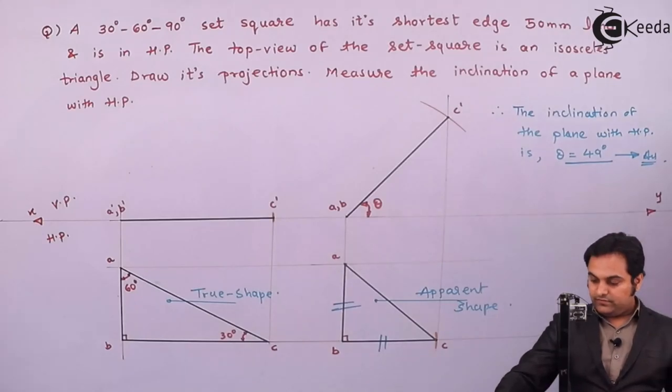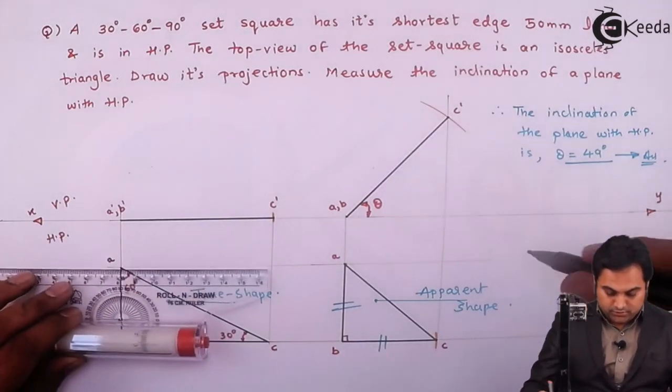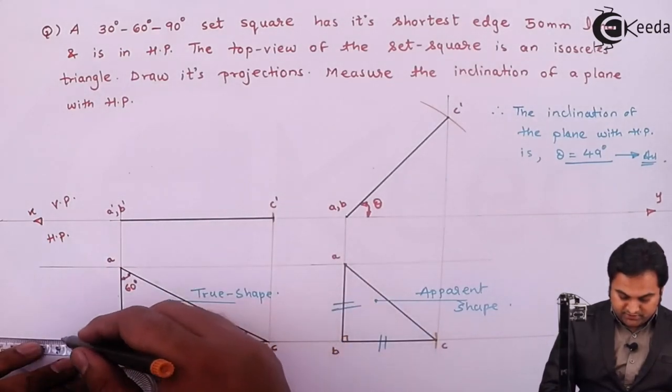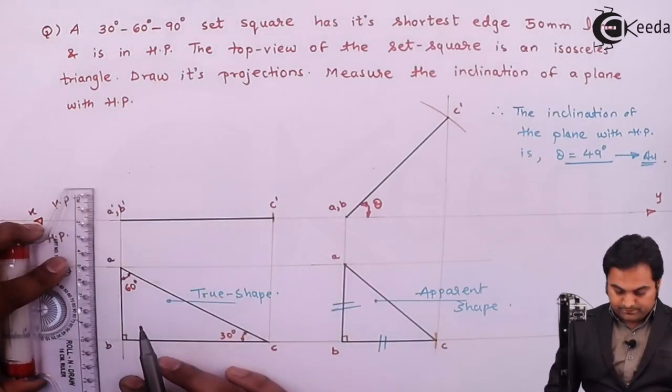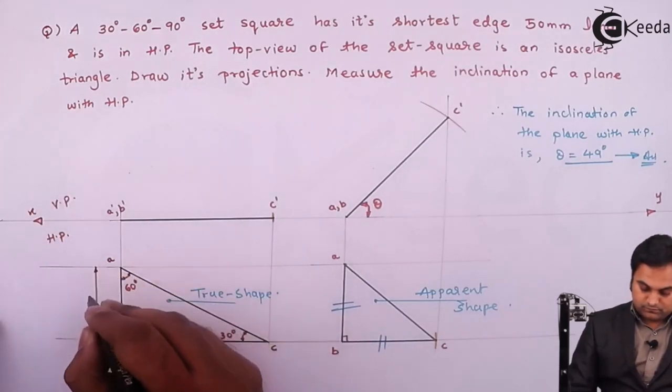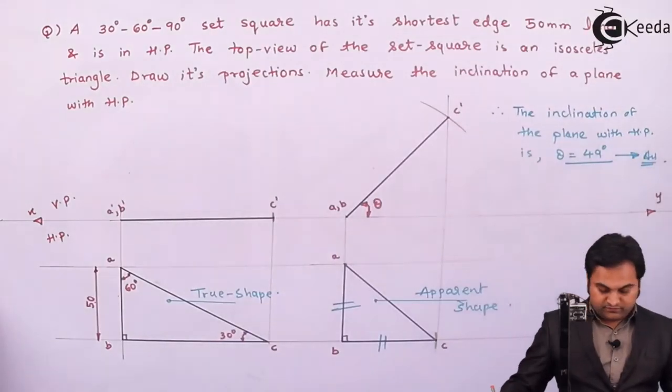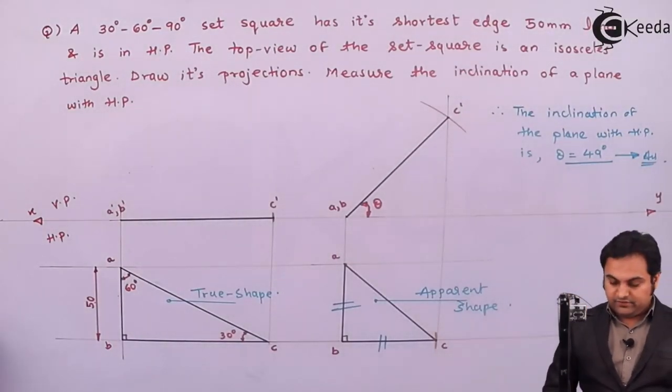Then at last, giving the dimension to the side, which was unknown. And here, this is known. AB is given as 50 mm. 50 mm. And with this, we complete the problem.